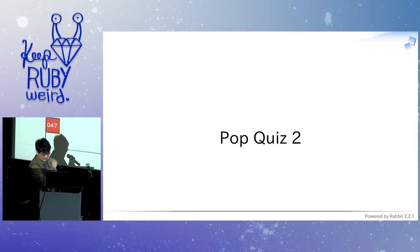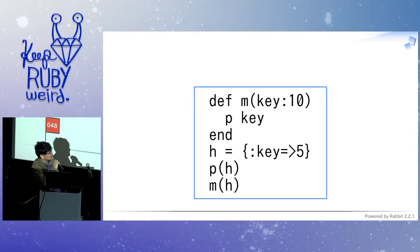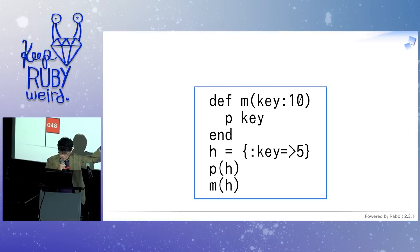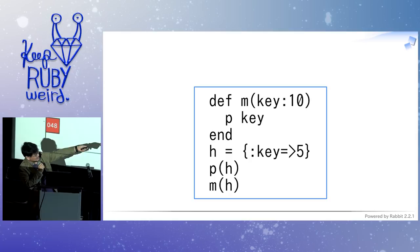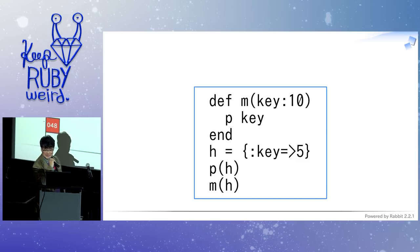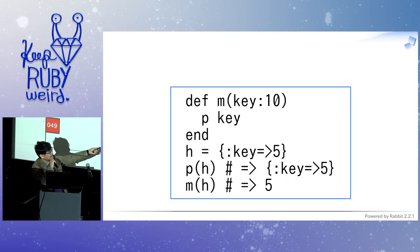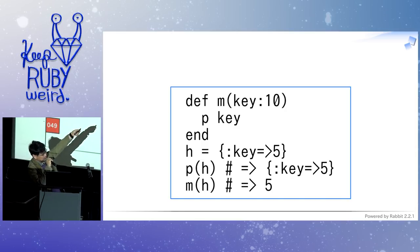Point two: what should happen? H is a hash. Then print the hash, you get hash. What would happen when we call M with H? It's easy too — it happens like this: because the keyword argument is the hash at the bottom of the argument list, it will be considered as the keyword hash. So the keyword argument is used and key will be 5.